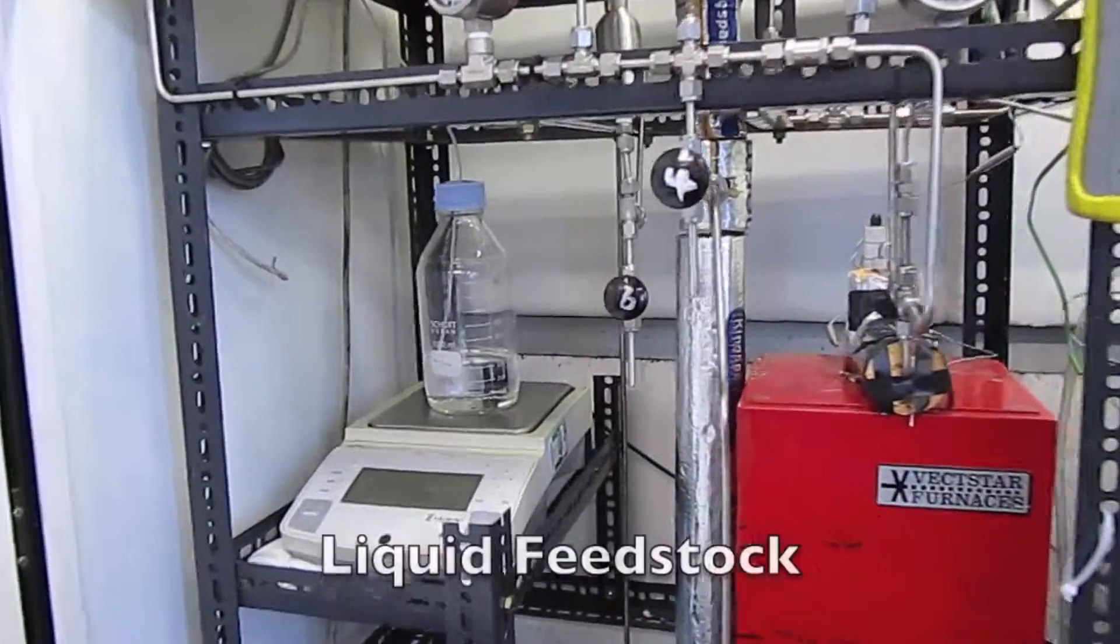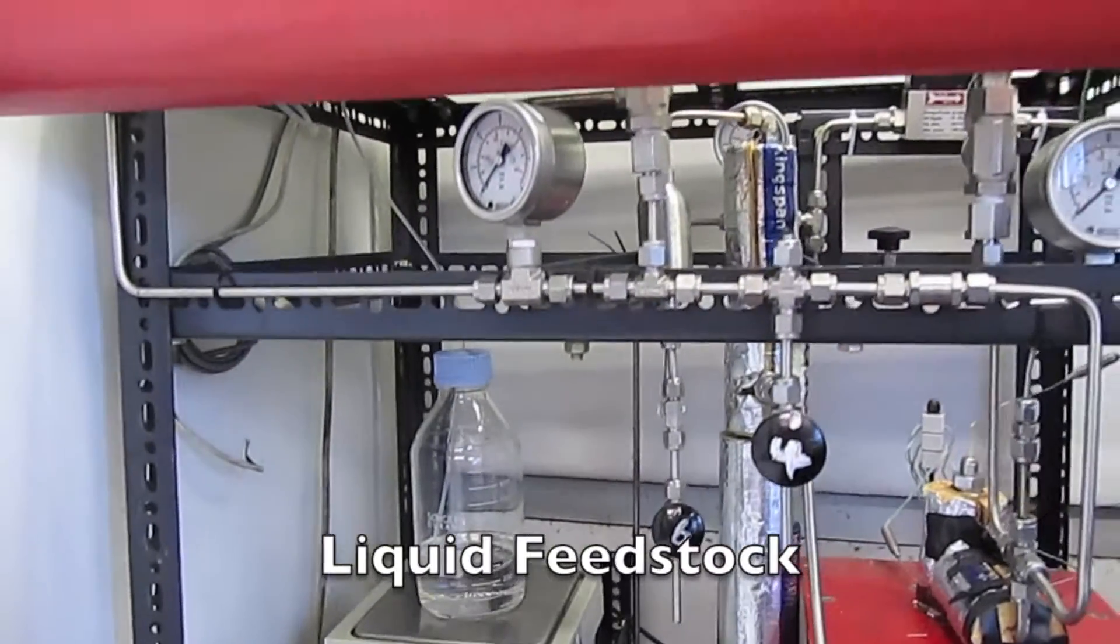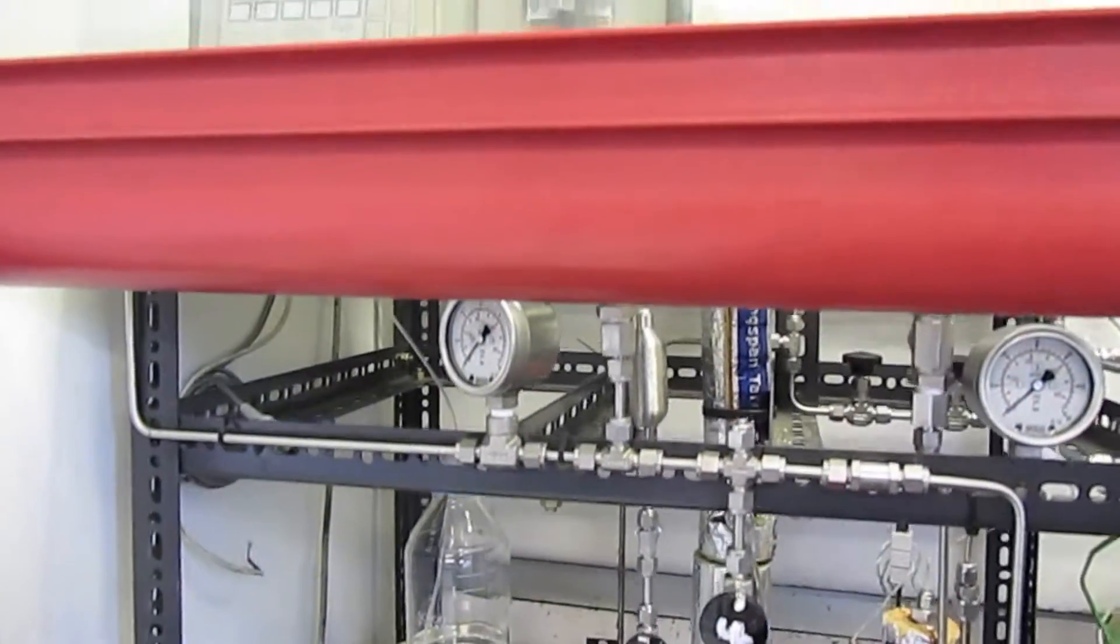The liquid feedstock is supplied to the reactor using a HPLC pump operating in a range of 5 to 50 litres per hour.